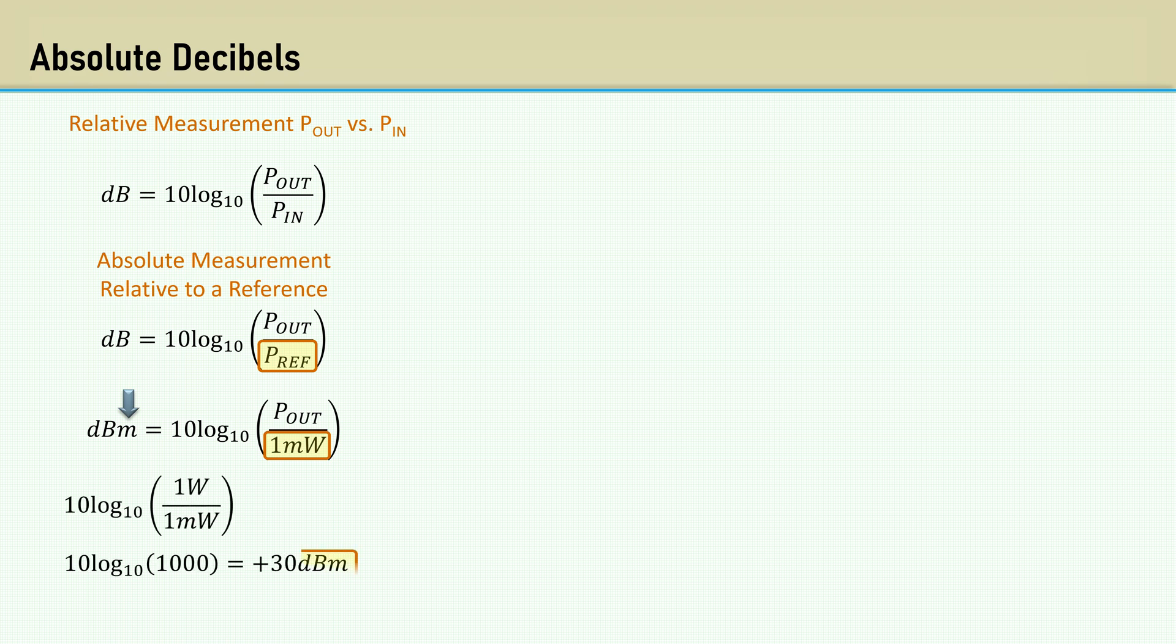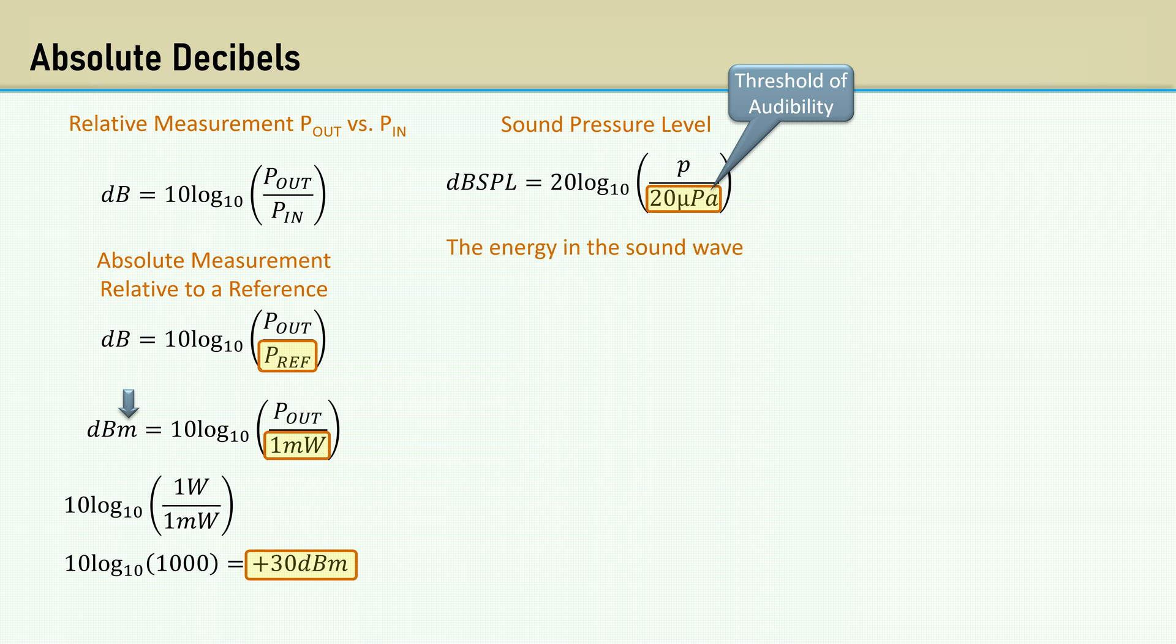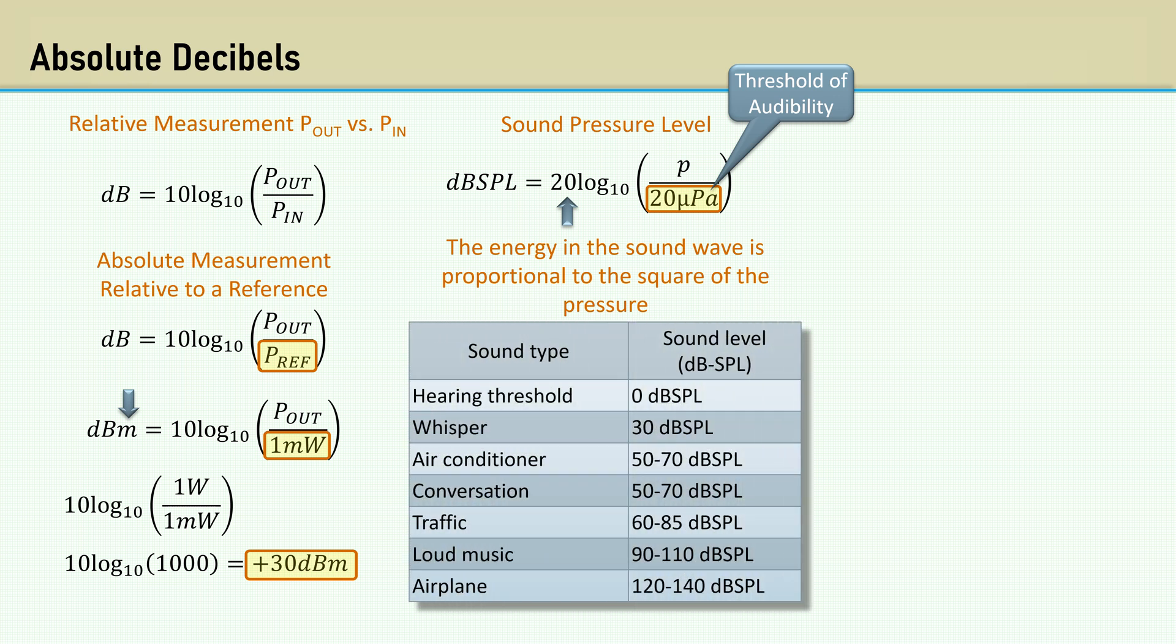Another example of an absolute decibel reference is with sound pressure. The reference is the threshold of audibility, which is 20 micropascals. That's the minimum discernible sound for young people. Note the energy in the sound wave is proportional to the square of pressure, so it's 20 log the ratio of the pressure P over the threshold value. Here's a chart of the dB SPL sound levels for various sounds. 140 dB SPL is 10 million times greater pressure than the minimum discernible sound. Yet another example of how logarithmic values are more reasonable to work with.